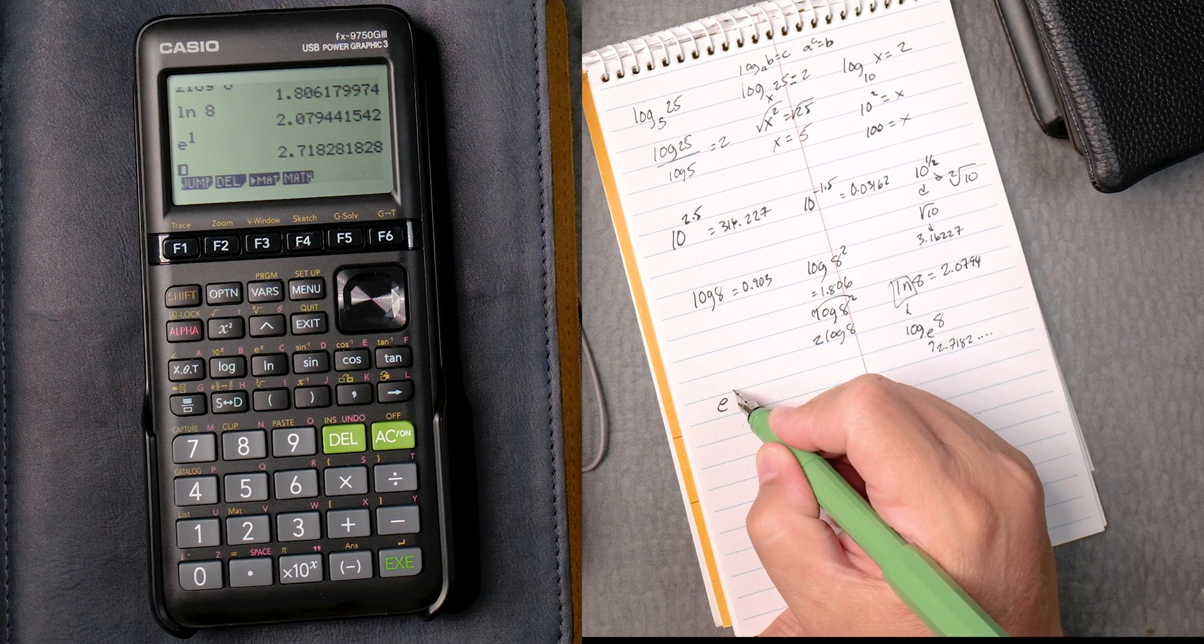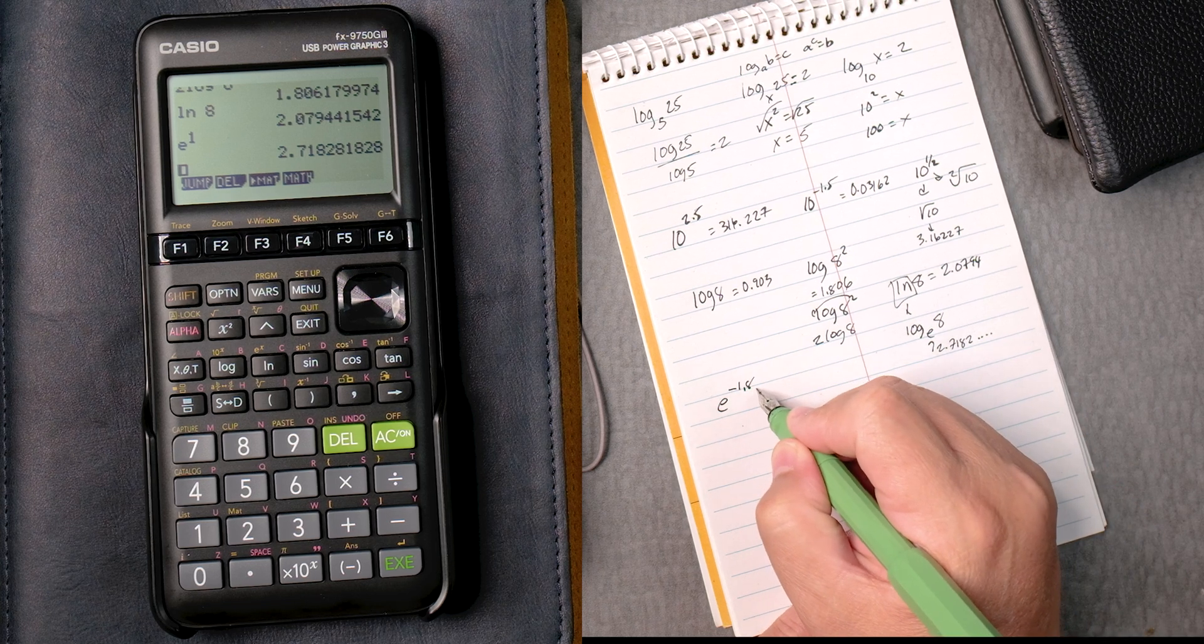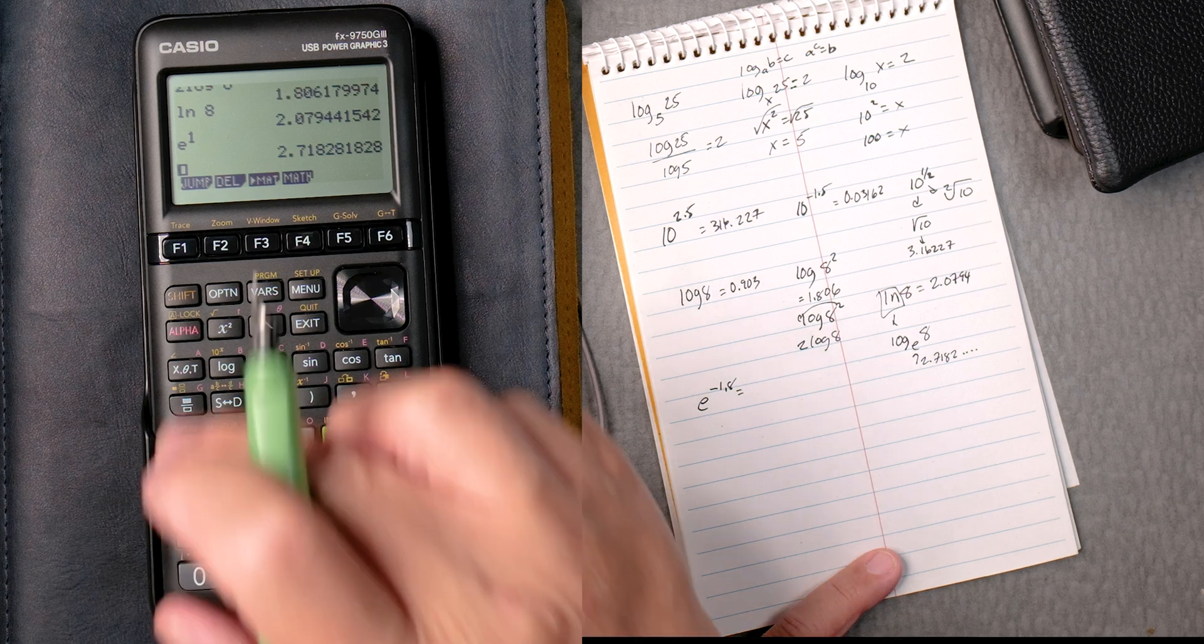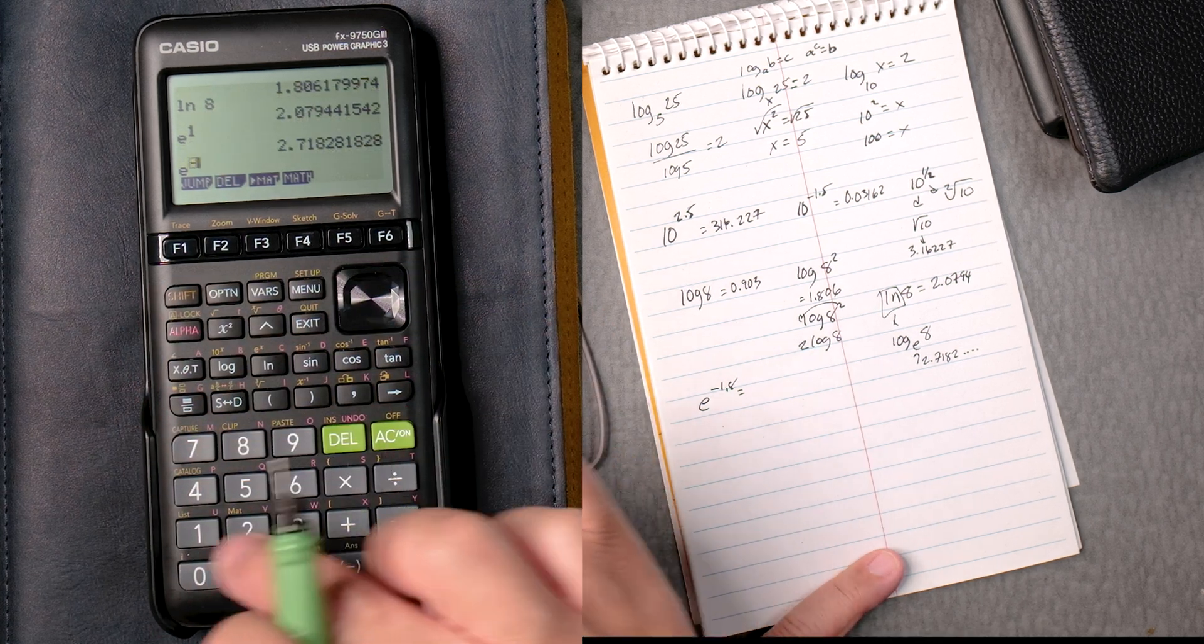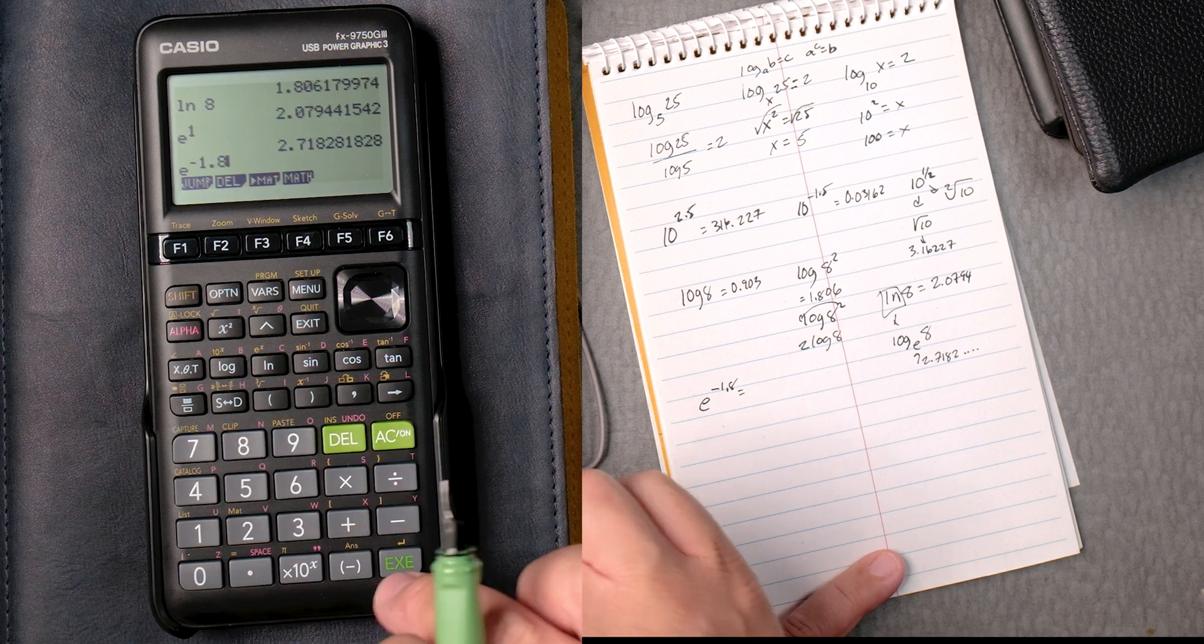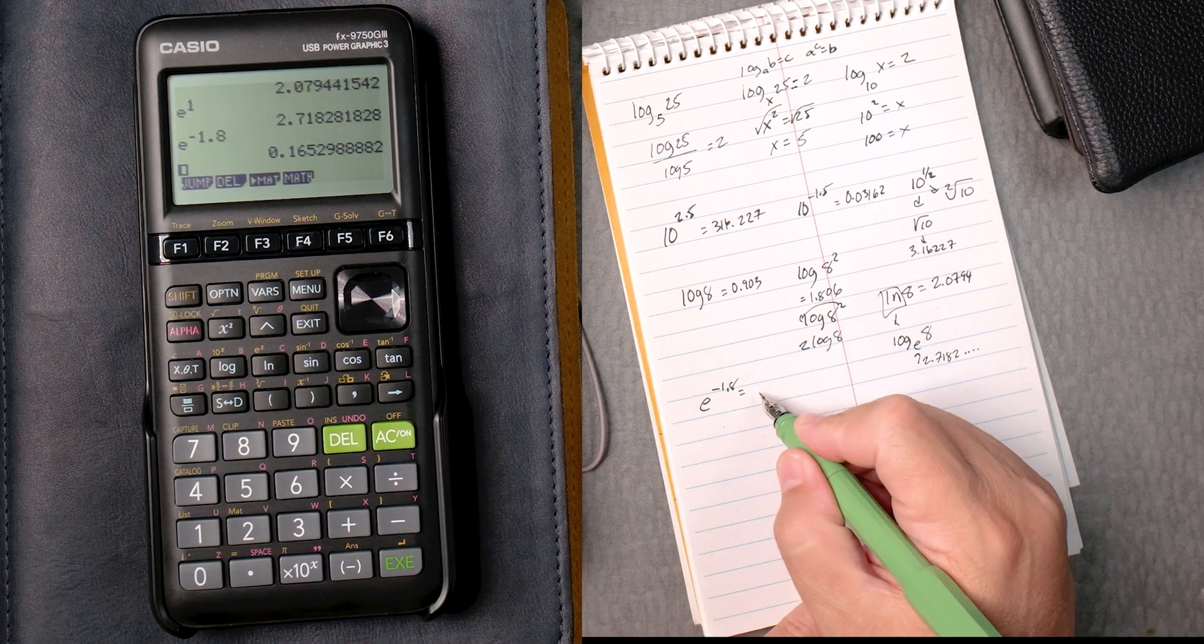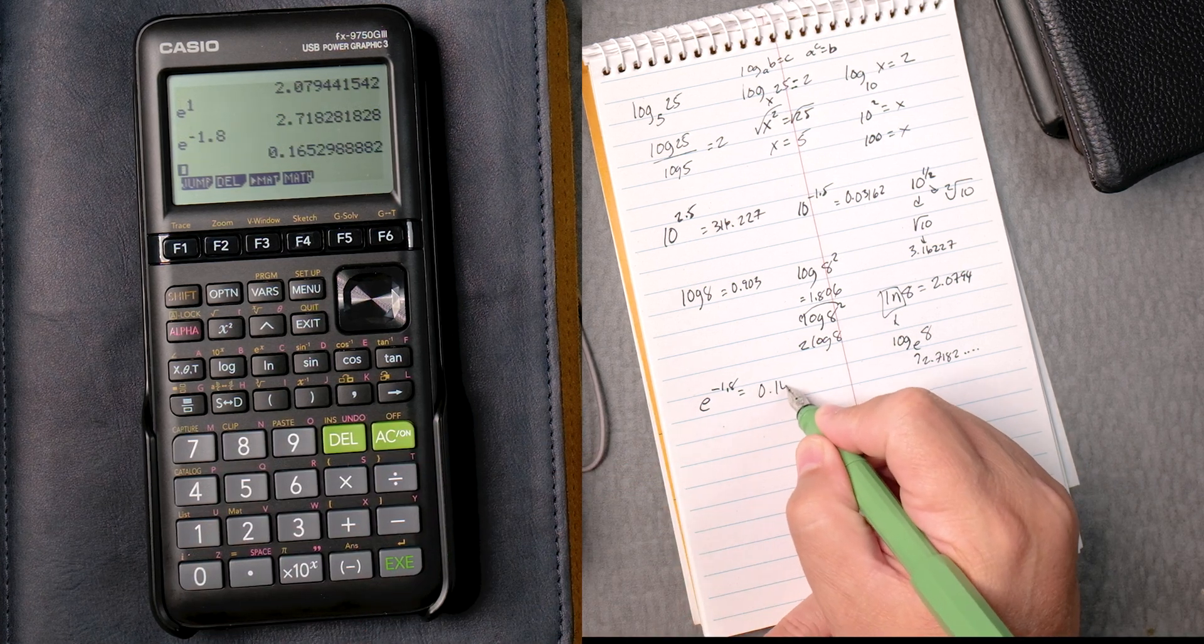So e to the negative 1.8. Let's go to shift e to the x, negative 1.8, execute, 0.1652.